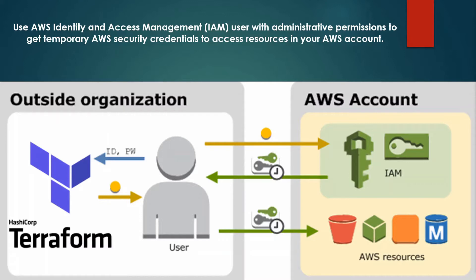Instead, we recommend that you create an AWS Identity and Access Management account and give it temporary administrative permission to access AWS resources. In this figure we see a user outside the organization using Terraform, which we will use to deploy AWS resources via Terraform configuration files. Once we create an IAM user account from the AWS console, we are going to add the key information and credentials for that account to our Terraform configuration files.